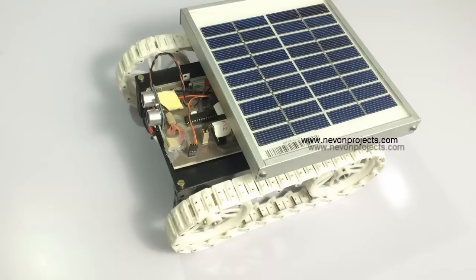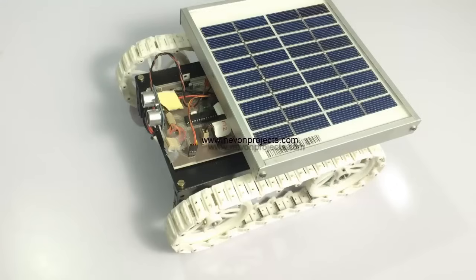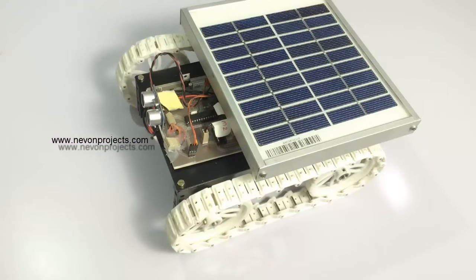It automatically cuts the grass moving through a particular field in zigzag manner and covers the entire ground or the lawn or garden, whatever it is, cutting grass. And it also has a grass cutter motor which is used for cutting the grass.